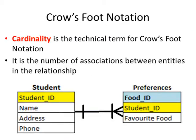The Crow's Foot Notation can be summarized using the technical term known as cardinality, which is the number of associations between the entities in a relationship.